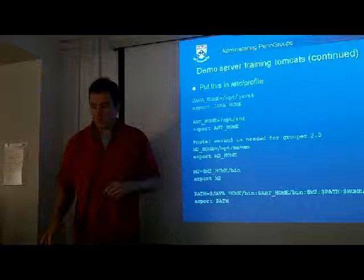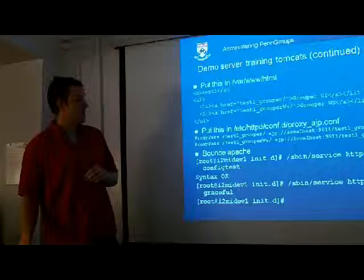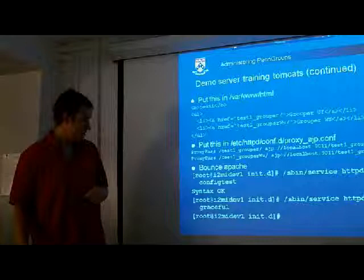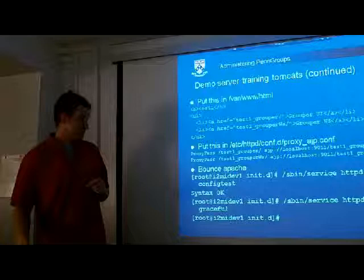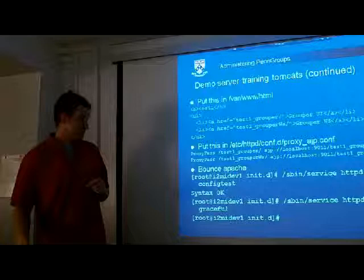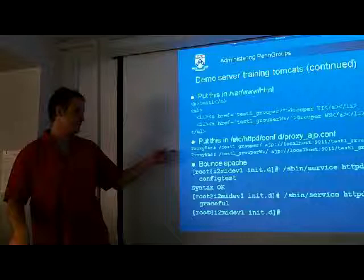If you go to the web page grouperdemo.internet2.edu, it has all the links to all the environments, including links to your UI and web service. To do that, just edit the index HTML and put some proxy passes in, which is how we do Apache-to-Tomcat communication. That's a little bit different than how Penn does it with mod_jk. With the proxy pass way, you don't need a workers.properties file. However, Grouper at Penn does still use mod_jk to be consistent with all our other deployments, but the demo server doesn't.